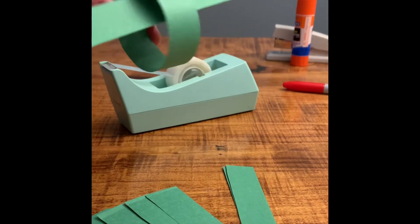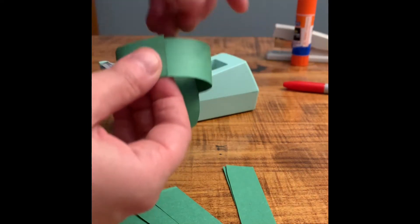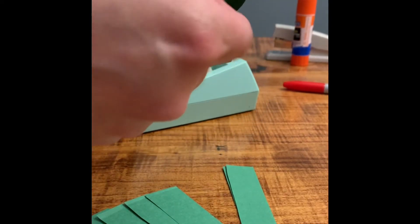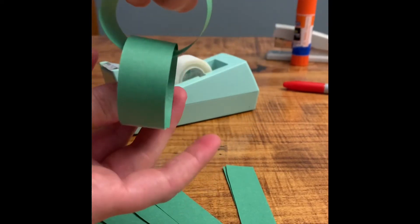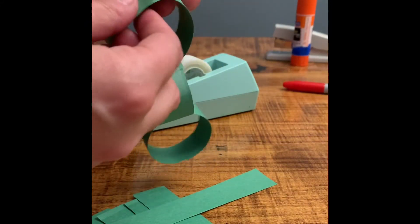Then you will begin taking additional strips of paper and putting them through the center of your loop, then securing them in the same way that you secured the first piece. You will continue doing this until you've used all your strips of paper.